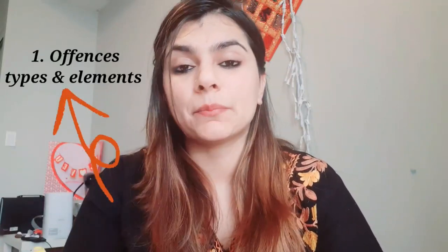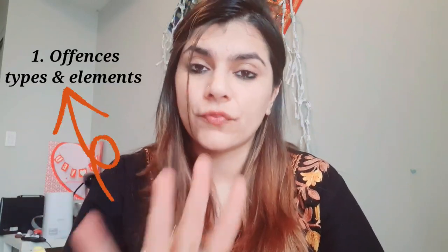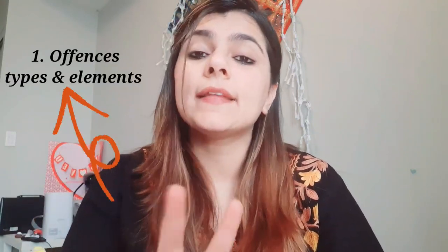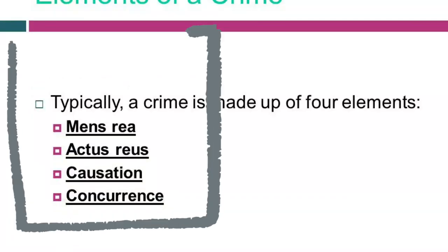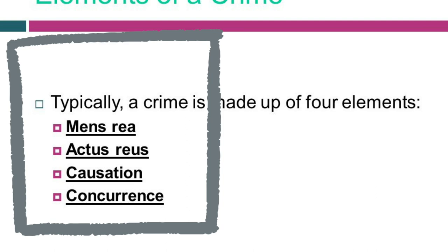Let me broadly discuss the syllabus divided into chart parts. First is the offense — it has types of offenses: it can be a regulatory offense, an indictable offense, and so on. Then there are elements of offense, which are mainly two parts: actus reus and mens rea. These are the core elements we study in common law countries.